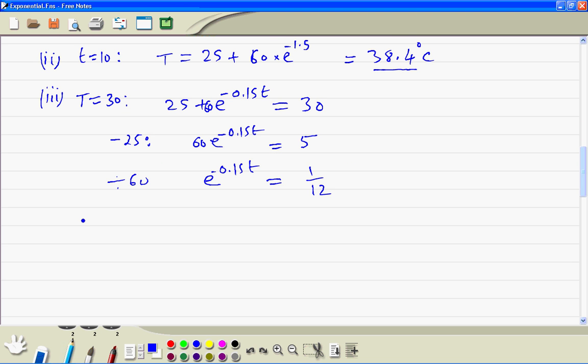Now we take the natural log of both sides, so the e cancels. So we have minus 0.15t is equal to ln(1/12). Then we divide by minus 0.15, and you should get the answer to be 16.6 minutes.